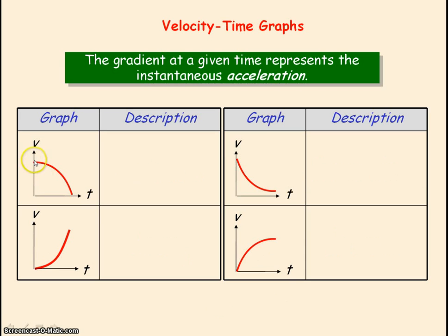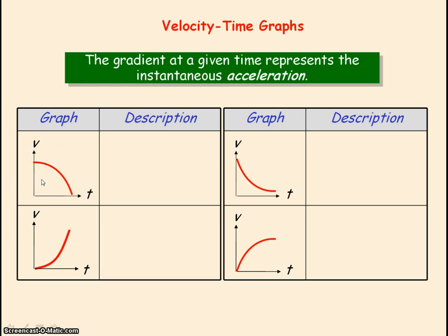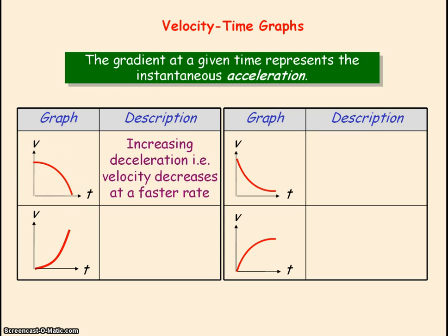For this graph, we can see that the gradient is again negative, so we've got a deceleration — velocity is decreasing. But we can also see that the gradient is increasing as time is increasing. So a negative but increasing gradient implies an increasing deceleration.